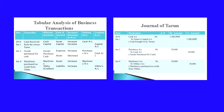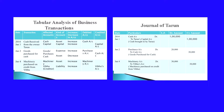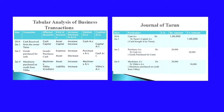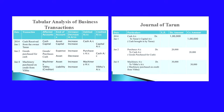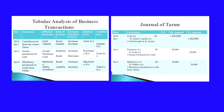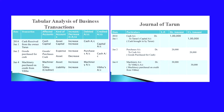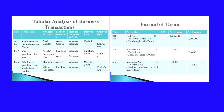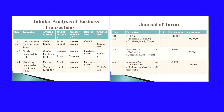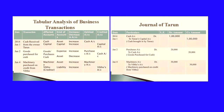Coming to the second transaction, January 2nd: goods purchased for cash. Goods are coming inside the business and cash is going from the business, so goods and cash are the affected accounts. Goods will come under expense as purchases, and cash will come under asset account. Purchases are increasing and cash is decreasing. So purchases account will be debited and cash account will be credited.